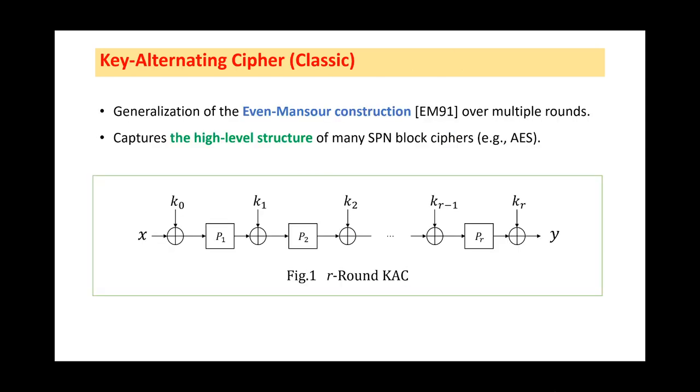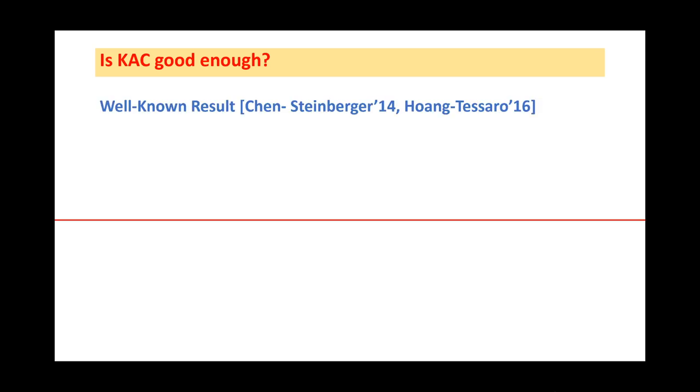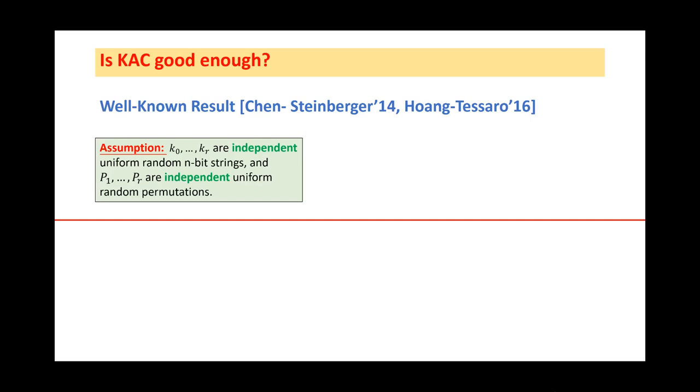The key alternating cipher is well known as it captures the high-level structure of many SPN block ciphers, such as AES. The following figure illustrates the r-round KAC, in which all the round keys and the round permutations are chosen independently. At this point, we can ask a question: Is the KAC construction good enough? At first, we recall the well-known result, proved by Chen and Steinberger, and then refined by Hoang and Tessaro. It says that if the round keys and the round permutations are chosen independently and randomly, then we can get a tight security bound of r-round KAC.